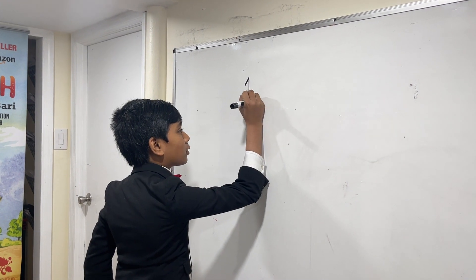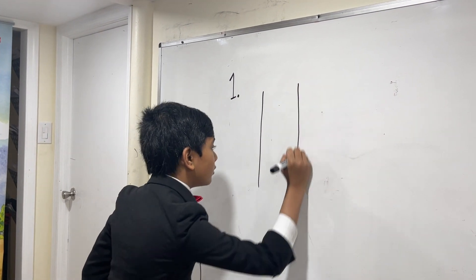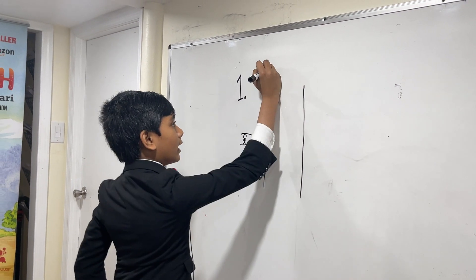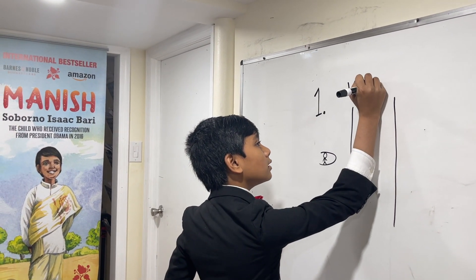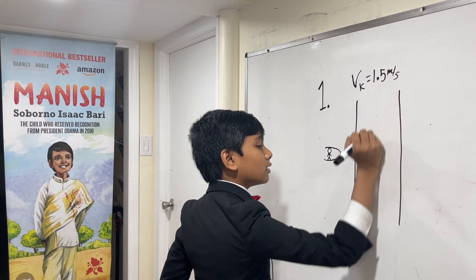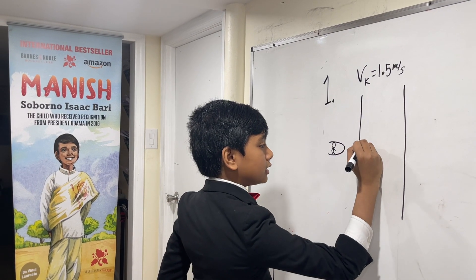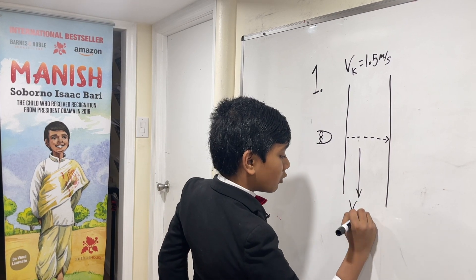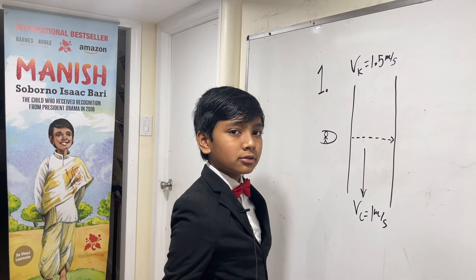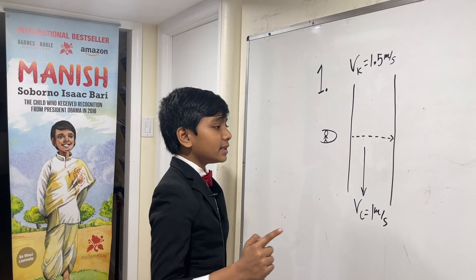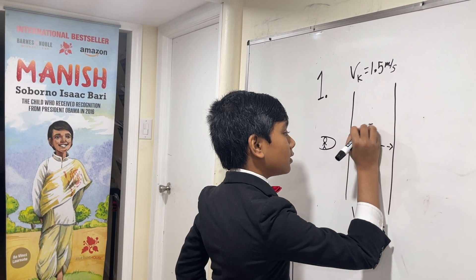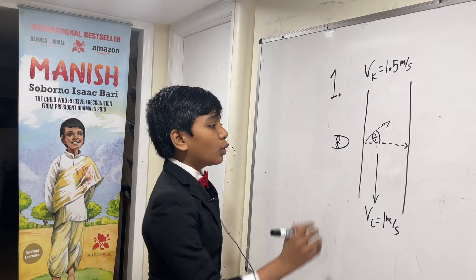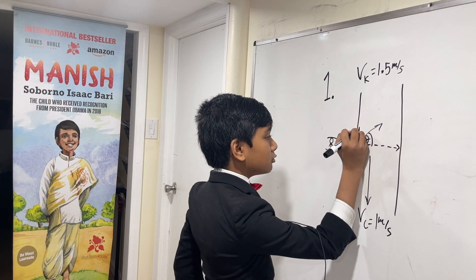So here's question number one. We have a kayaker who's trying to cross a river, and the kayaker can paddle at a speed of 1.5 meters per second. However, even though she wants to travel directly east, she knows that there is a current flowing at 1 meter per second due south. The question is: what path should she take, and at what angle, such that the y-component of her velocity will cancel out the current?